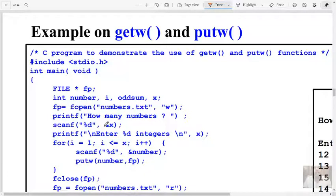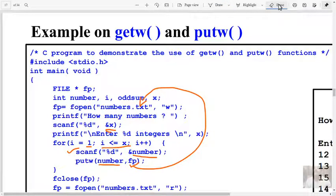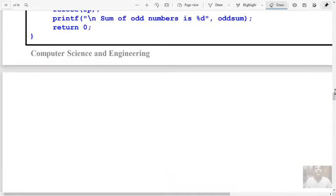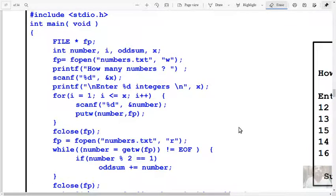Here I declared file pointer, integer variable number, i for loop counter, odd sum. I will find the odd sum in the file that may contain integer values and x to store intermediate value. I will open the file that is numbers.txt in write mode because I have to input the values now.